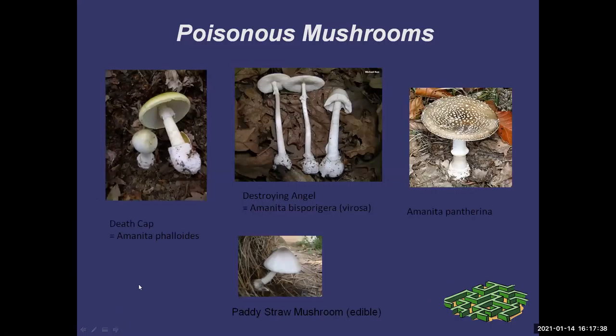Amanitas have a very particular toxin that causes liver failure. The symptoms start with a stomach upset and then people think they're better, but in about four days they're in liver failure, which can be irreversible. So it's really important that if you eat any mushroom and you think you've been poisoned, you need to go seek medical care immediately — there's a chance they can save you if they get to it right away. Otherwise you're screwed.